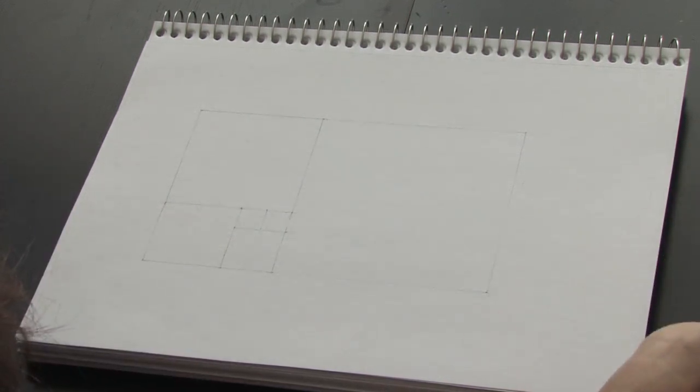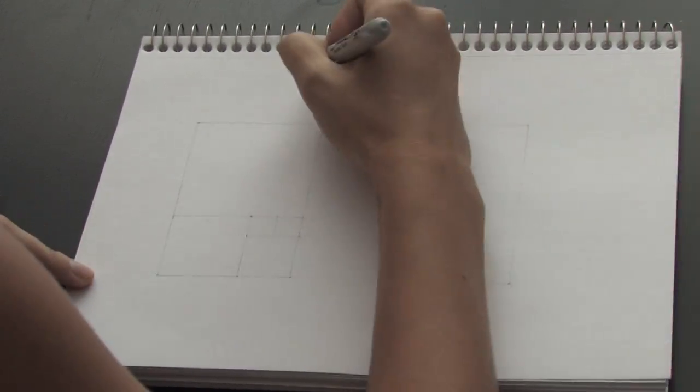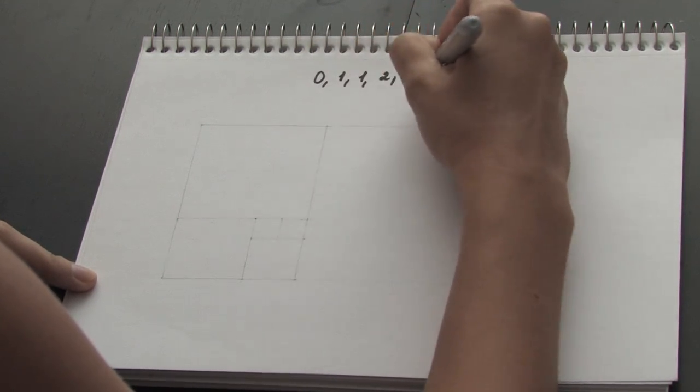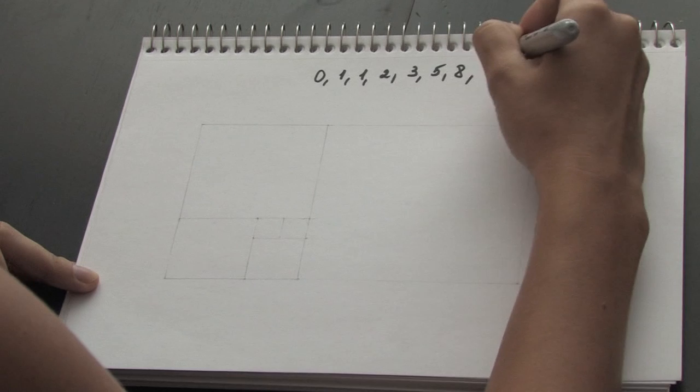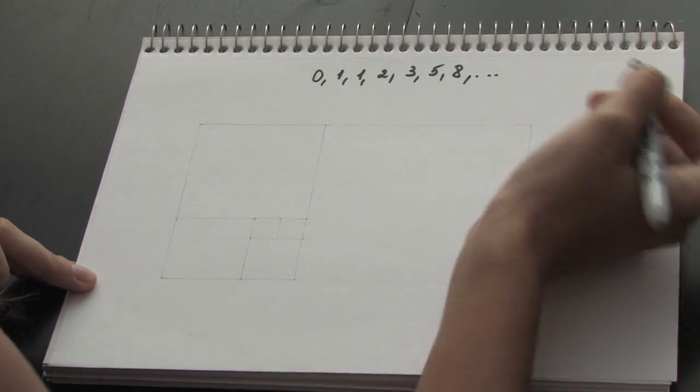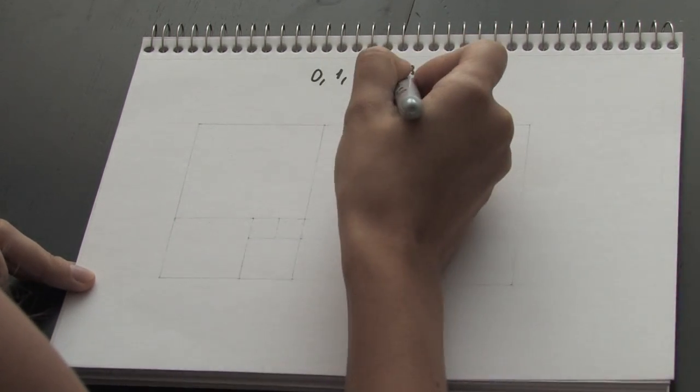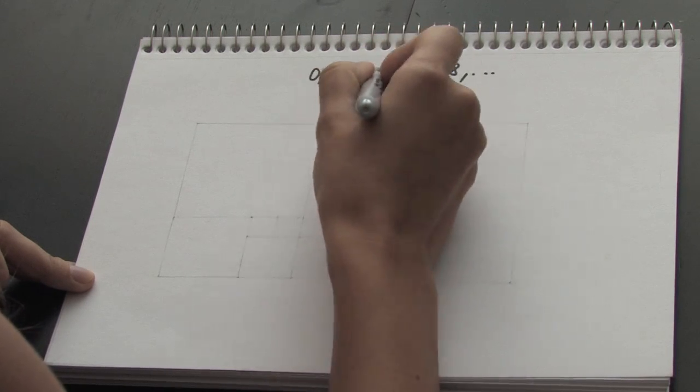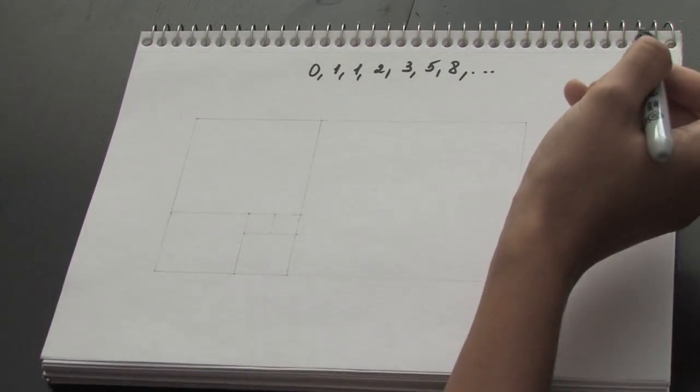The Fibonacci spiral follows the geometric pattern composed of the Fibonacci sequence. The sequence is a series of numbers like 0, 1, 1, 2, 3, 5, and so on. Each number is the sum of the two previous numbers, like 3 is the sum of 1 and 2.